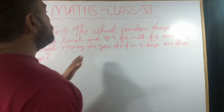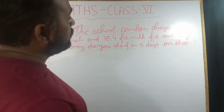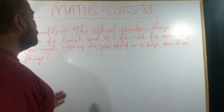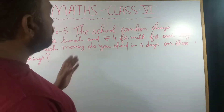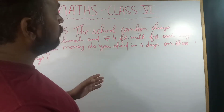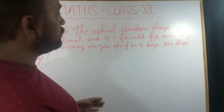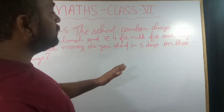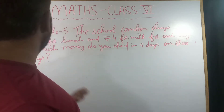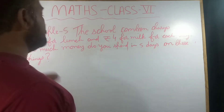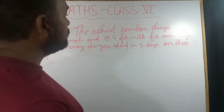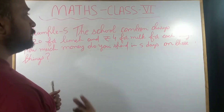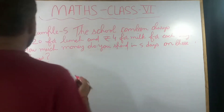The school canteen charges 20 rupees for lunch and 4 rupees for milk for each day. How much money do you spend in five days on these things? We will use two methods over here.